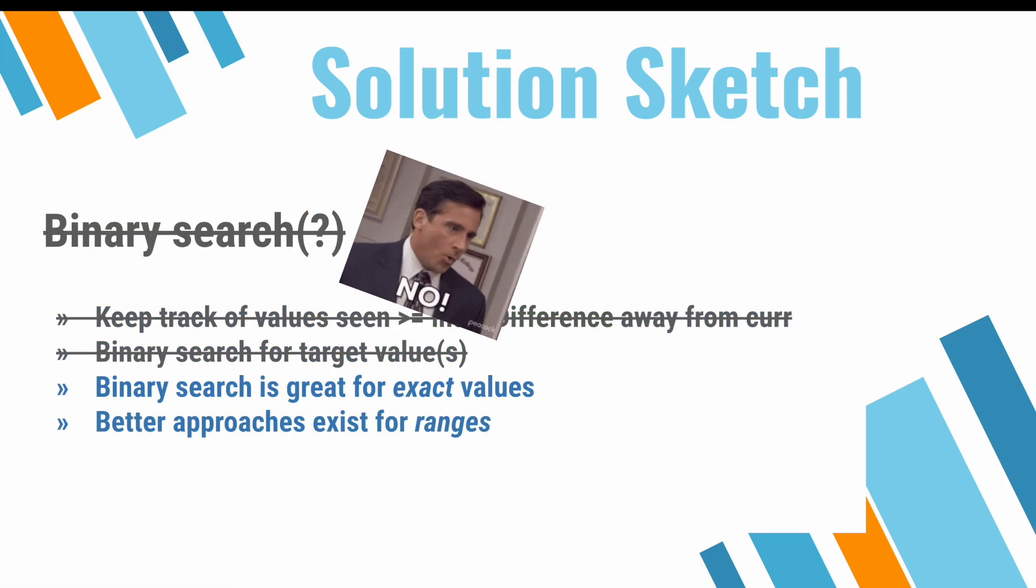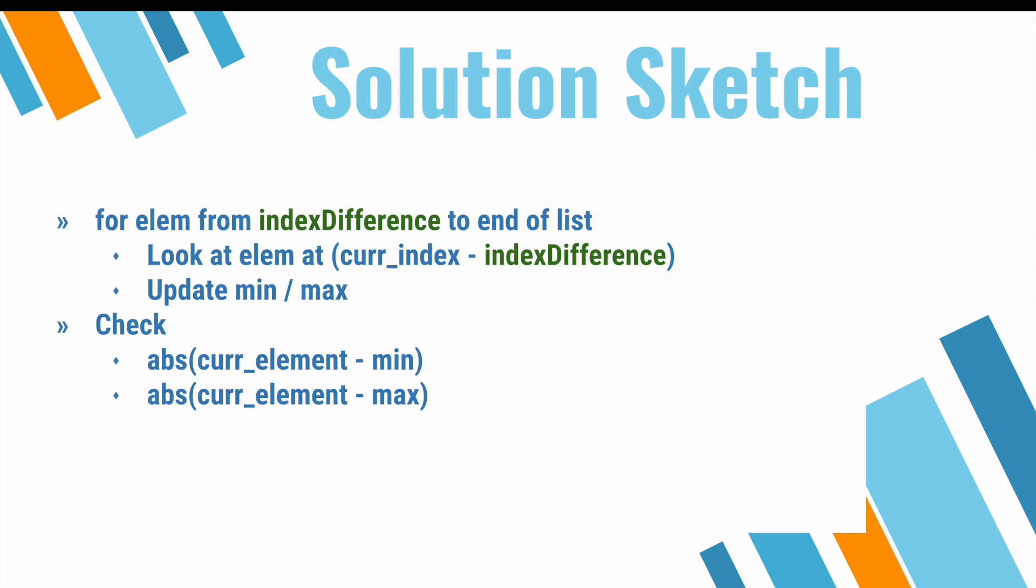But, here's why that's actually not really appropriate for this kind of question. The main reason is that we're allowed to return any set of indices that work. Binary search is great when you're trying to find exact values, like if our task instead was to find the minimum valued indices that satisfy the conditions in this problem. But, since we can return any set of indices that work, we don't care about exact values, and therefore we don't care about binary search. So, let's revisit our approach about looking at the maximum and minimum values, and let's refine the approach so that we don't get trumped by the index difference constraint.